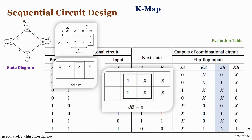For JB: filling the K-map with values at positions 1, 3, 5, 7, we group the ones. Taking the common term across these groups gives X, so JB equals X.